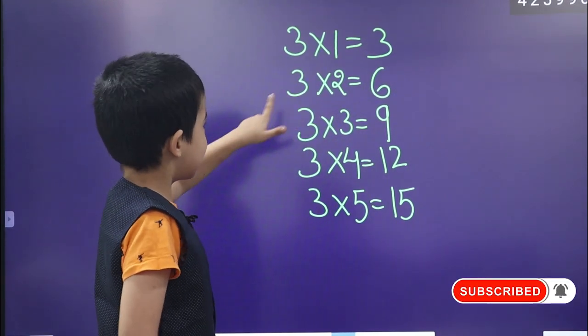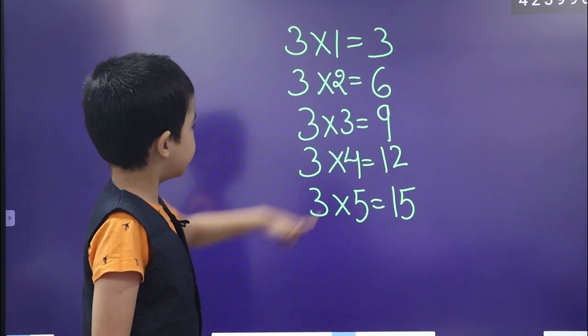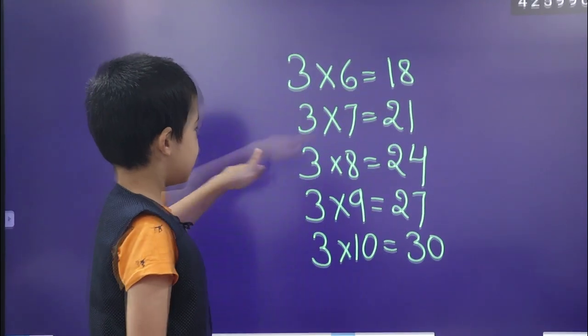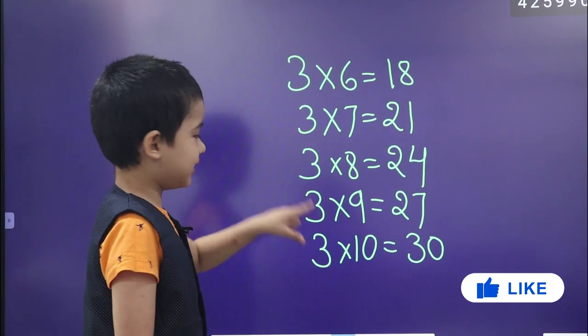3 times 1 equals 3, 3 times 2 equals 6, 3 times 3 equals 9, 3 times 4 equals 12, 3 times 5 equals 15, 3 times 6 equals 18, 3 times 7 equals 21, 3 times 8 equals 24, 3 times 9 equals 27, 3 times 10 equals 30.